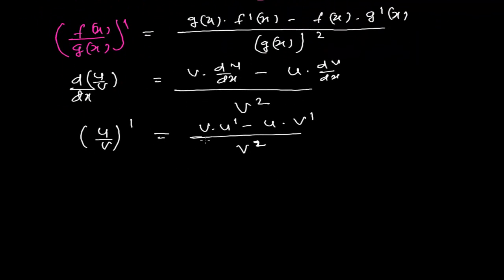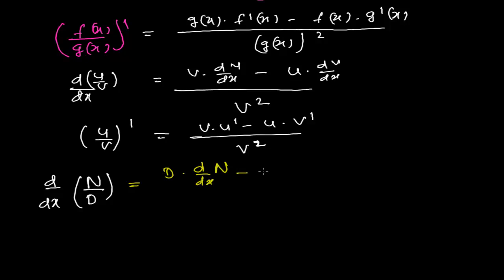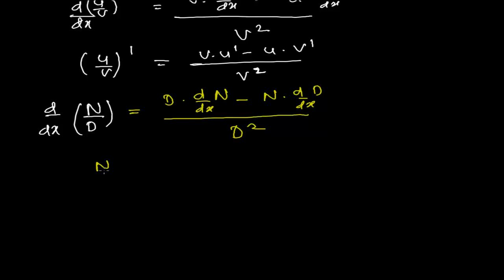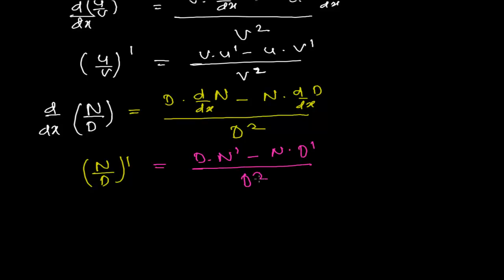Some people also write it using numerator and denominator terminology. So d/dx of numerator over denominator equals denominator times derivative of numerator, minus numerator times derivative of denominator, whole divided by denominator squared. Or: (numerator/denominator)' = (denominator × derivative of numerator − numerator × derivative of denominator) / denominator squared. You can understand or remember it in any of these ways — whichever feels easier to you.